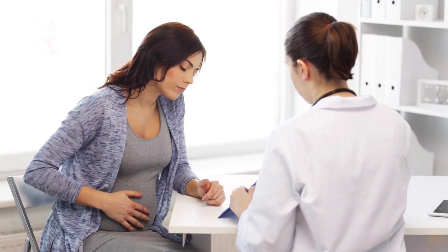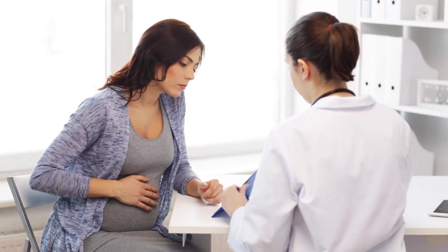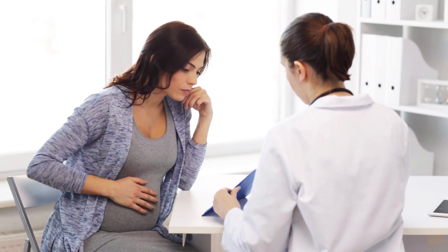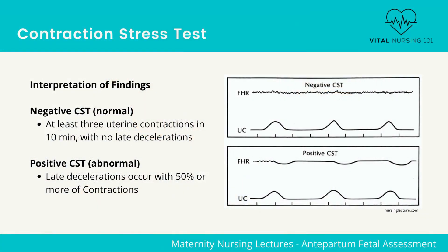Maintain bed rest during the procedure. Once the test is complete, you will need to interpret the findings. Test results are either negative, positive, equivocal, suspicious, or unsatisfactory. A negative contraction stress test is when there are at least three uterine contractions in a 10-minute period with no late decelerations — this is a reassuring, normal result.